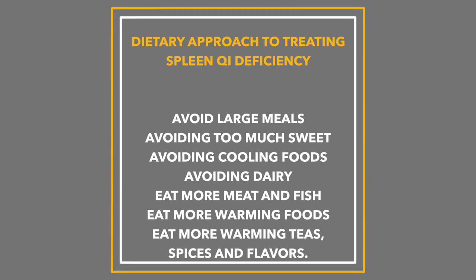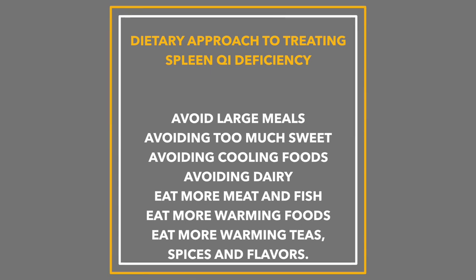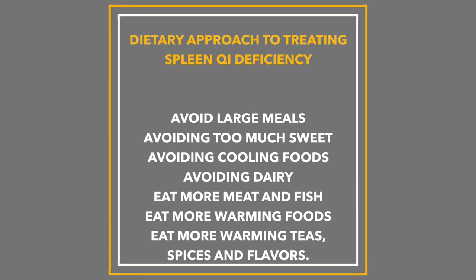Further recommendations for spleen chi deficiency include avoiding too many cooling foods, since digestion overall prefers warmth. Avoid dairy, because it's considered cold and damp — cold is bad for the spleen when there's already weakness, and dampness is associated with phlegm. For example, having a lot of yogurt and producing excess mucus is bad for an already weak spleen. You should eat more meat and fish, which are more warming, and have more warming vegetables, warming teas, and warming spices and flavors. This is considered a constitutional approach to wellness — the overall management of your unique body over the length of your lifetime.